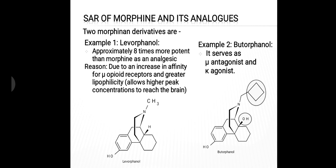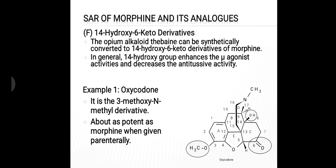The second example is butorphanol. There are two structural changes: a hydroxyl group is attached at the 14 position, and a cyclobutyl moiety is attached in place of the methyl moiety at the 17 position. Butorphanol serves as a mu antagonist and kappa agonist.